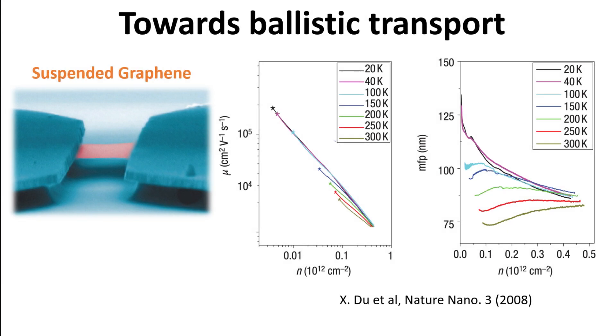Measured carrier mobilities in these suspended devices can approach values that correspond to electron mean free paths of order 100 nm. Here, mean free path refers to the average distance before an electron encounters a scattering event. Since nanofabrication has enabled device dimensions of about 100 nm, ballistic transport and graphene is within reach.